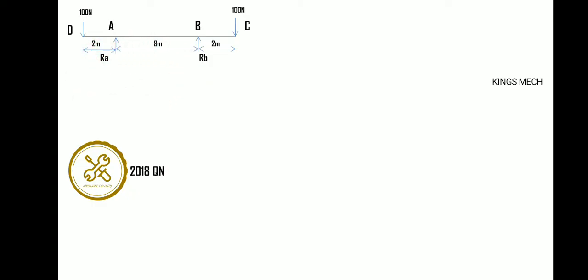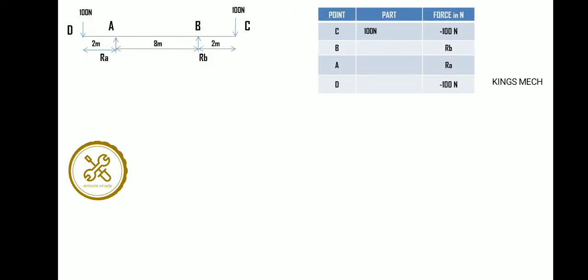We have reaction forces RA and RB. This question was asked by the university in November/December 2018. Setting up the vertical equilibrium: the 100 Newton load at C acts downward (minus 100), RB acts upward (positive), RA acts upward (positive), and the 100 Newton load at D acts downward (minus 100). This gives RA + RB = 200 — that is the first step complete.